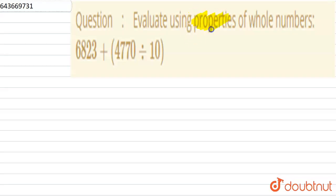Here is: evaluate using properties of whole numbers. The question is 6823 + (4770 ÷ 10).